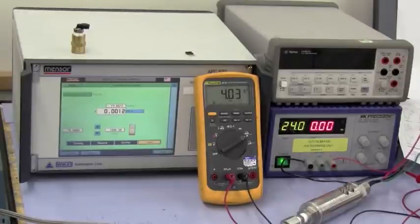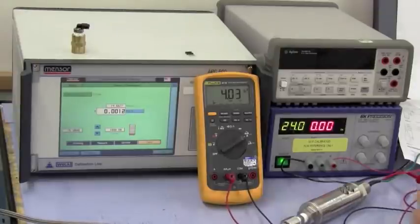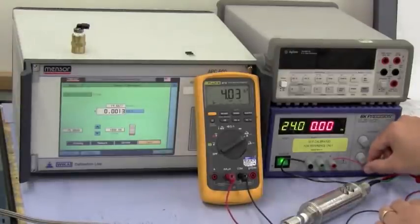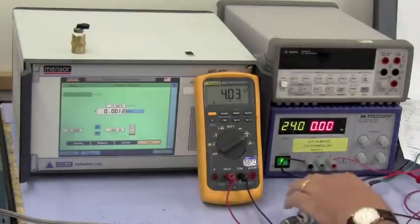I've taken the red wire, the positive wire from the transmitter, and attached it to the negative terminal of the multimeter. And then I've connected the positive from the multimeter to the positive of the power supply. So now we're ready to span the transmitter.